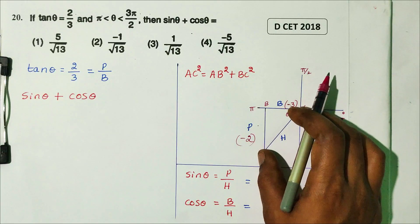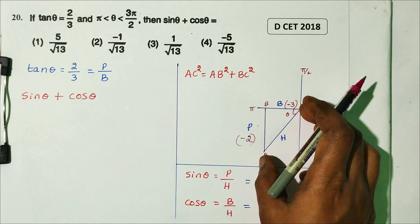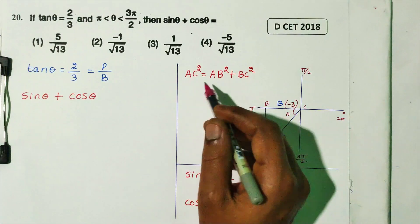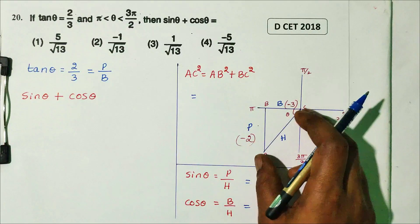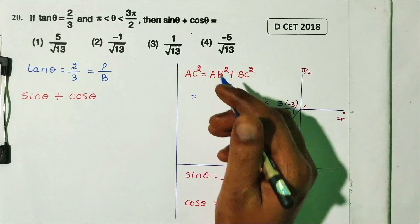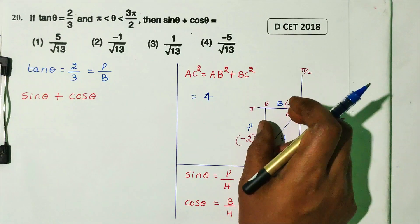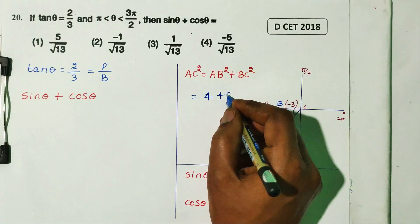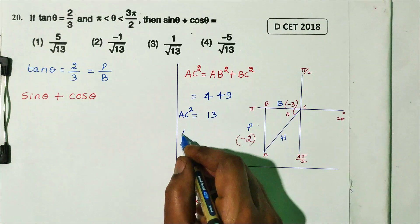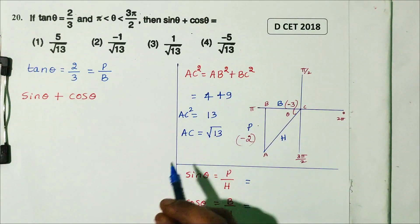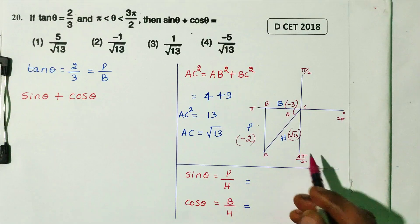Using the Pythagorean theorem: hypotenuse² = perpendicular² + base² = (−2)² + (−3)² = 4 + 9 = 13. So hypotenuse = √13. In the third quadrant, both sine and cosine are negative, so perpendicular = −2 and base = −3.